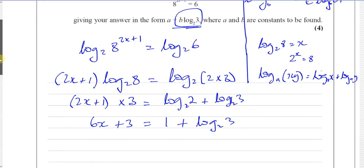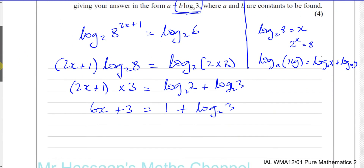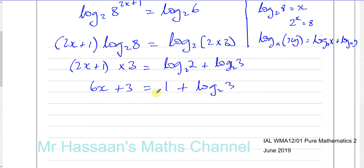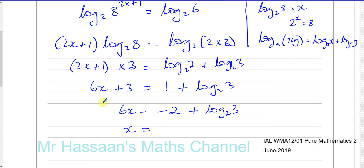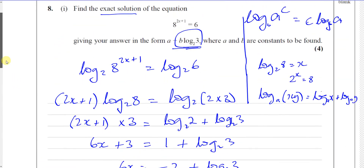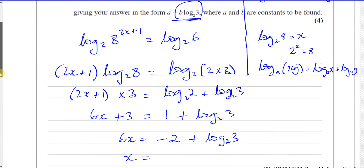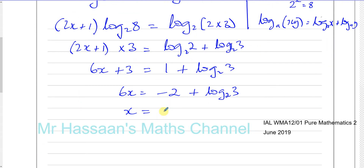Now we have to solve the equation and find x. Subtracting 3 from both sides gives 6x equals 1 minus 3, which is minus 2, plus log to the base 2 of 3. Then dividing both sides by 6, writing it as separate terms, we get x equals minus 2 over 6, which is minus one third, plus one sixth times log to the base 2 of 3.